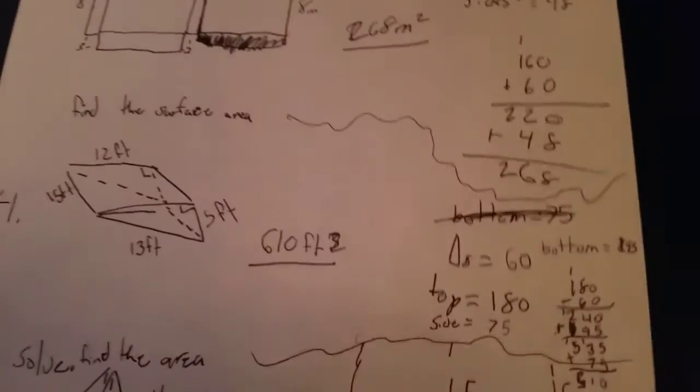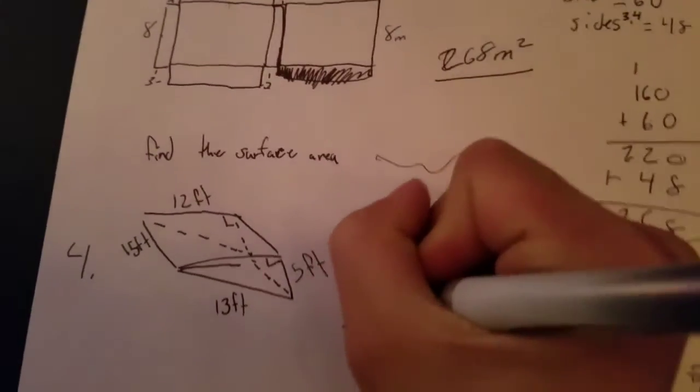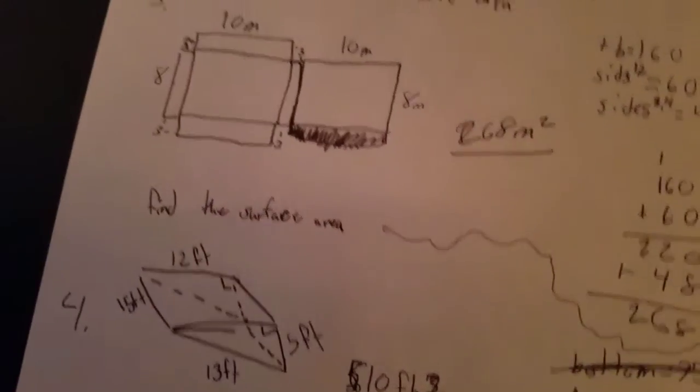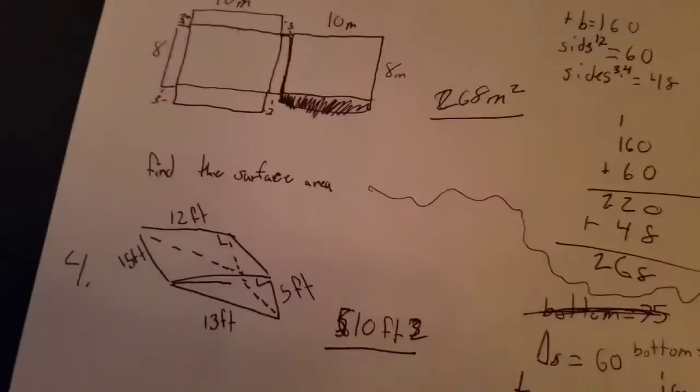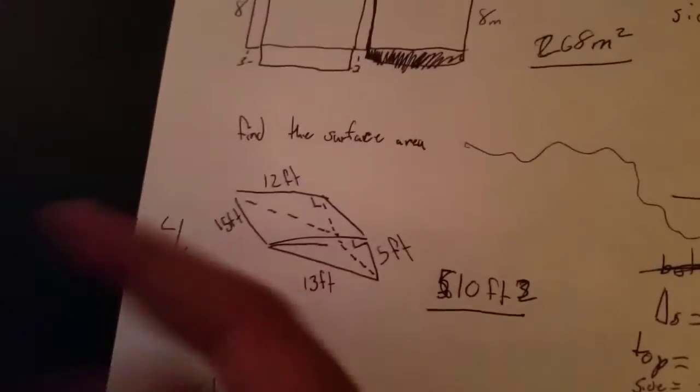Okay. And so you add that all together and give you 510, not 610. 510 feet squared. Feet squared, yeah. Because it's finding the surface area. So if you folded this out, it would be a two-dimensional figure. And now on to our third one.